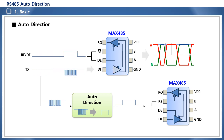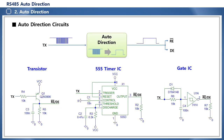There are three types of auto-direction circuits: a simple method using transistors, a method that applies a 555 timer IC, and a method using a gate IC. The auto-direction circuit is a circuit that generates a logic high pulse during the TX data signal section from the MCU. The circuit using the transistor uses a PNP transistor to invert the logic using the TX signal as input, and integrates the high-speed data pulse with capacitor C3 to create a DC level, forming a logic high signal during the TX packet section.